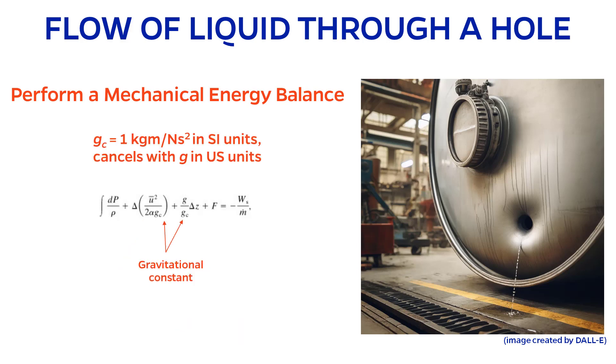Also remember the gravitational constant. This is a tricky concept that arises due to how different unit systems define force and mass. For SI units, gc simply equals 1 kilogram meter per newton second squared. And for US customary units, gc simply cancels with g.